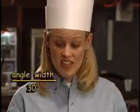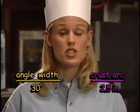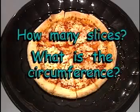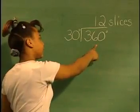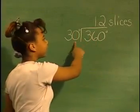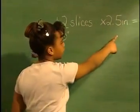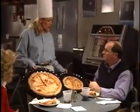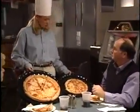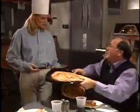Try this one. What if the angle width of your pizza slice measures 30 degrees and the crust arc is two and a half inches? How many slices would there be in the original pizza and what is the circumference? 360 degrees divided by 30 degrees equals 12 slices. 12 slices times 2.5 inches equals the circumference of 30 inches. Would you rather eat a 12-slice pizza or an 8-slice pizza? I'll choose the 8 slices — I couldn't possibly eat 12.